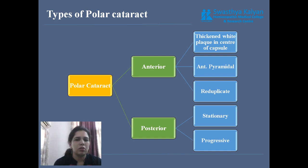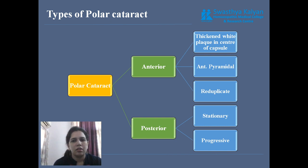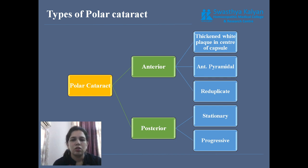Polar cataract is divided into anterior and posterior types. Anterior cataract is again divided into three types: first is white capsule opacity in the center; second is anterior pyramidal, where a pyramid-shaped opacity develops with the apex towards the cornea; third is reduplicate cataract, meaning a pyramidal-shaped opacity in the center with apex towards the cornea, then a clear capsule, and the subcapsular area is again cataractous — also known as imprint or double cataract, i.e., anterior pyramidal plus subcapsular cataract. Posterior polar cataract is stationary or progressive.